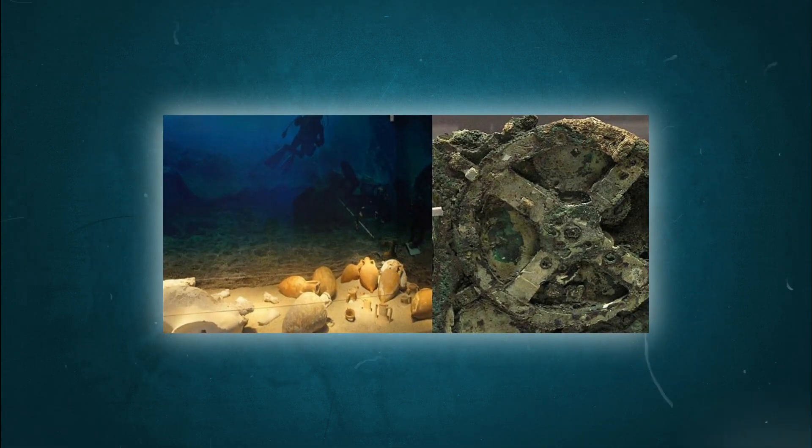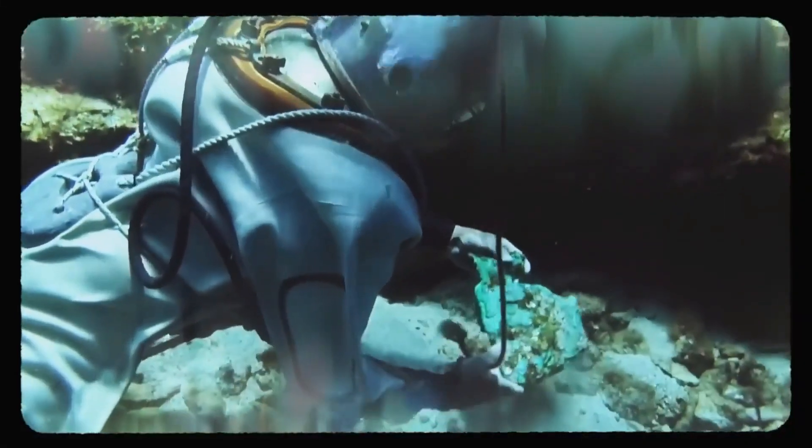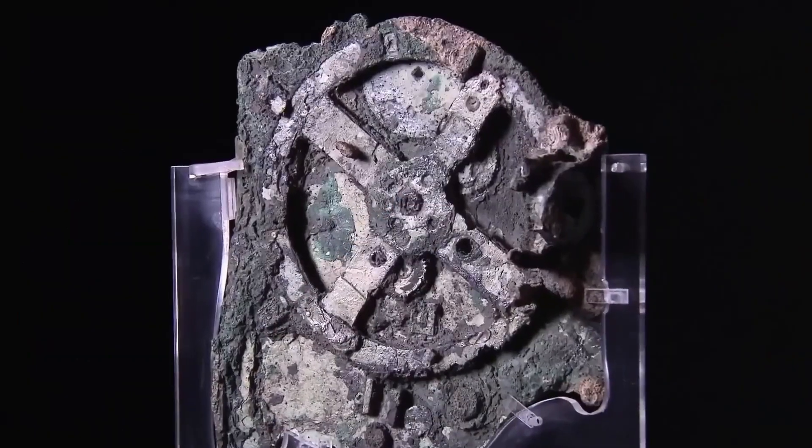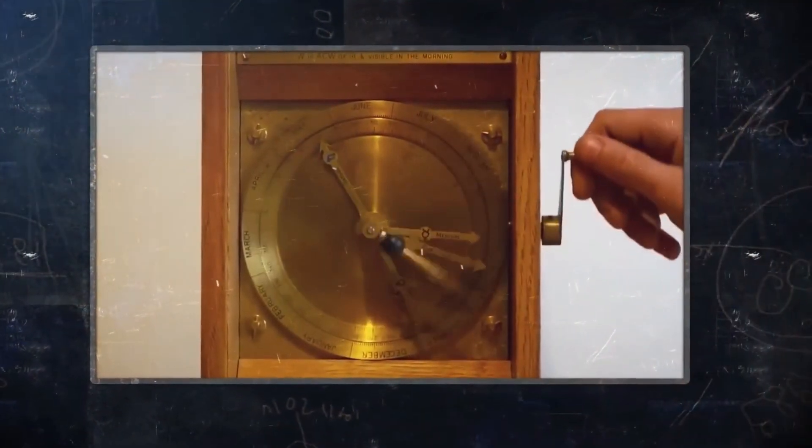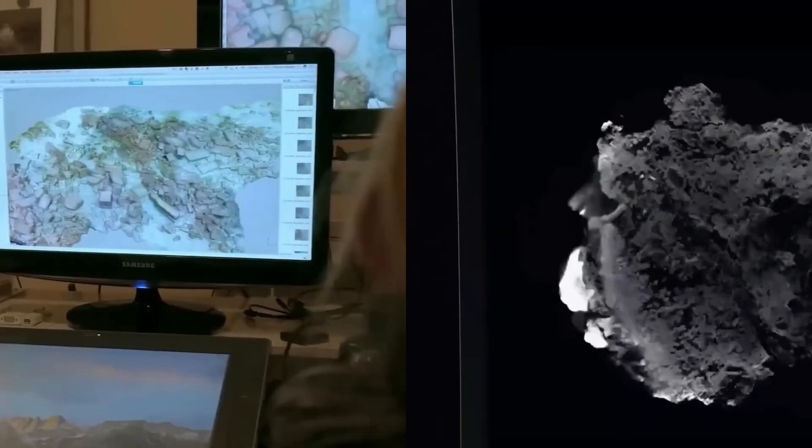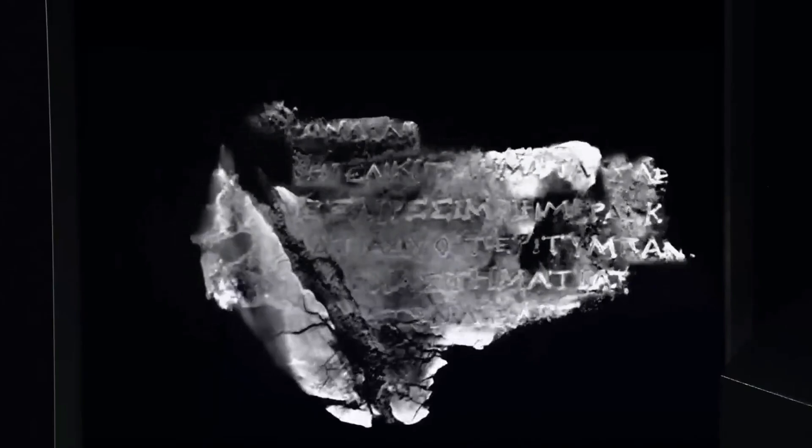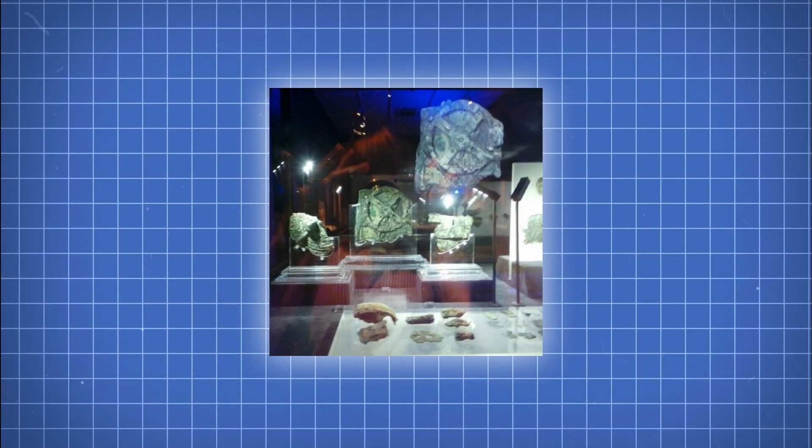In 1901, sponge divers off the Greek island of Antikythera uncovered a shipwreck that held a device unlike any other. This 2,000-year-old machine, now called the Antikythera mechanism, contained bronze gears and dials capable of tracking celestial events.